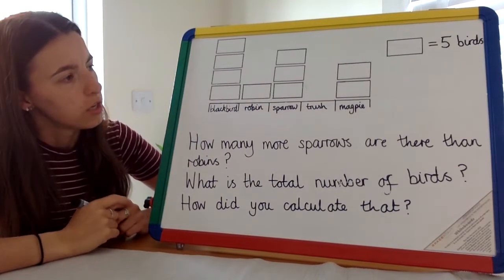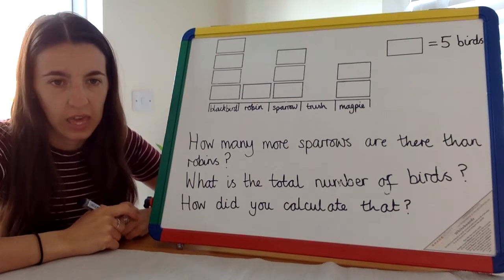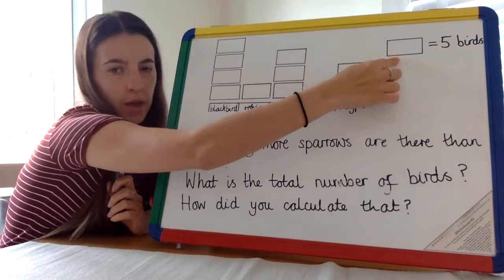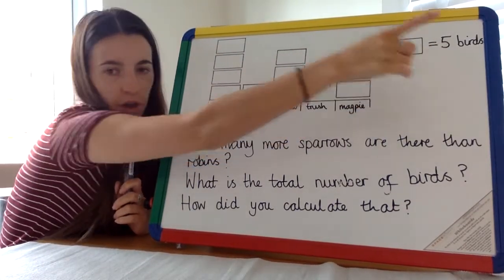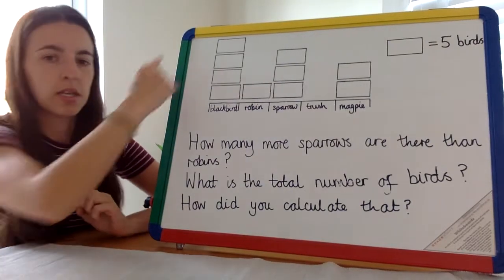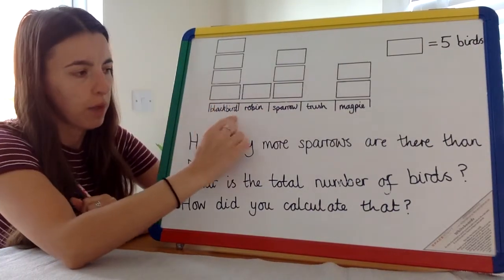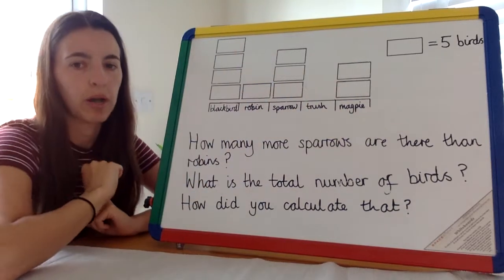The first thing to do is to look at the key. Here we've got each rectangle equal to five birds, because this pictogram is all about birds. We've got blackbird, robin, sparrow, thrush, and magpie.